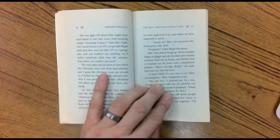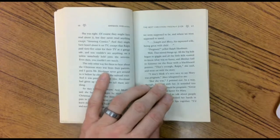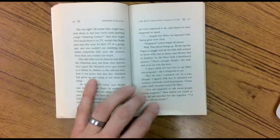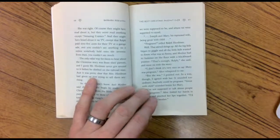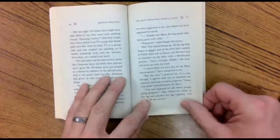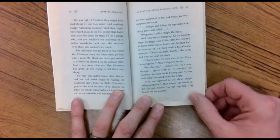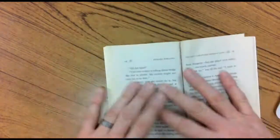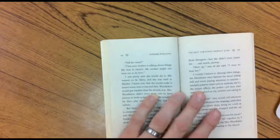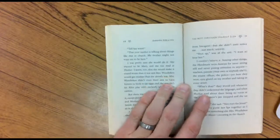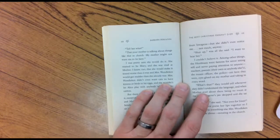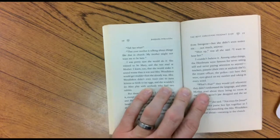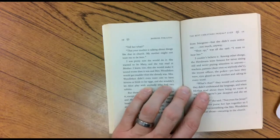That's enough, Ralph, she said, and went on with the story. I don't think it's very nice to say Mary was pregnant, Alice whispered. But she was, I pointed out. In a way, though, I agreed with her. It sounded too ordinary. Anybody could get pregnant. Great with child sounded better for Mary. I'm not supposed to talk about people being pregnant, Alice folded her hands in her lap and pinched her lips together. I'd better tell my mother. Tell her what? That your mother is talking about things like that in church. My mother might not want me to be here. I was pretty sure she would do it. She wanted to be Mary. And she was so mad at Mother. I knew, too, that she would make it sound worse than it was. And Mrs. Wendelkin would get madder than she already was.